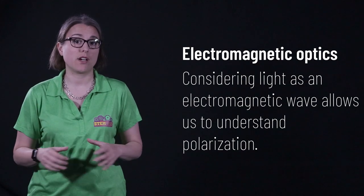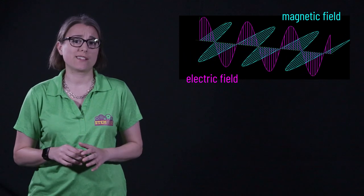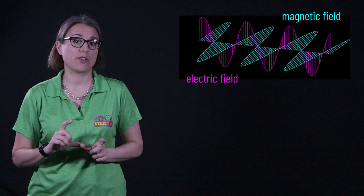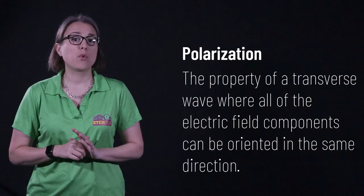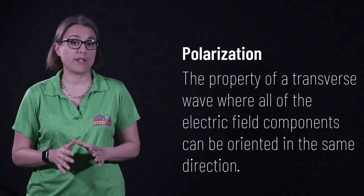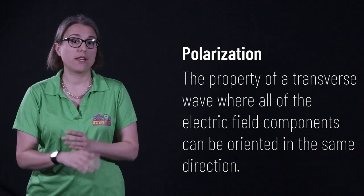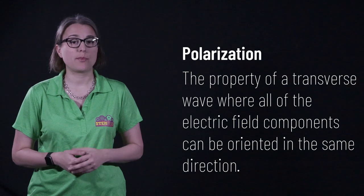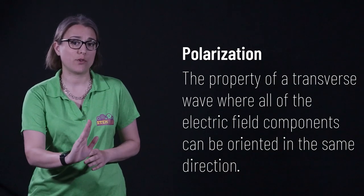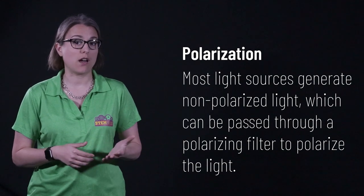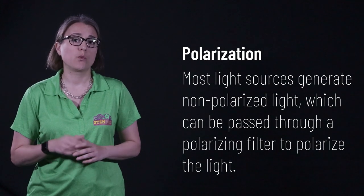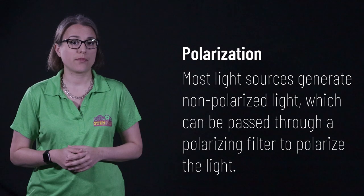As mentioned, modeling light as a wave allows us to understand properties of light such as interference and diffraction. Expanding our model to encompass electromagnetism allows us to understand the property of polarization. Recall that light is composed of electric fields and magnetic fields oscillating at right angles to each other. Light is a transverse wave, which means the motion of the light is at right angles to both the electric and magnetic fields. Polarization is the property of transverse waves which allows them to have their electric field components oriented in a single direction. Essentially, the electric fields oriented in any other direction can be blocked by a polarizing filter, allowing only a single orientation of waves to travel through space. Most light sources generate light waves with all orientations of electric fields, known as non-polarized light. This light can be passed through a polarizing filter, which only allows light of a certain orientation to pass through. The light is now polarized.